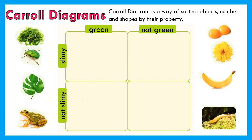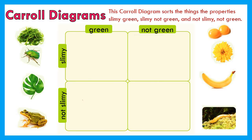A Carroll diagram is a way of sorting objects, numbers, and shapes by their properties. This Carroll diagram sorts things by the properties of slimy green, slimy not green, not slimy green, and not slimy not green.